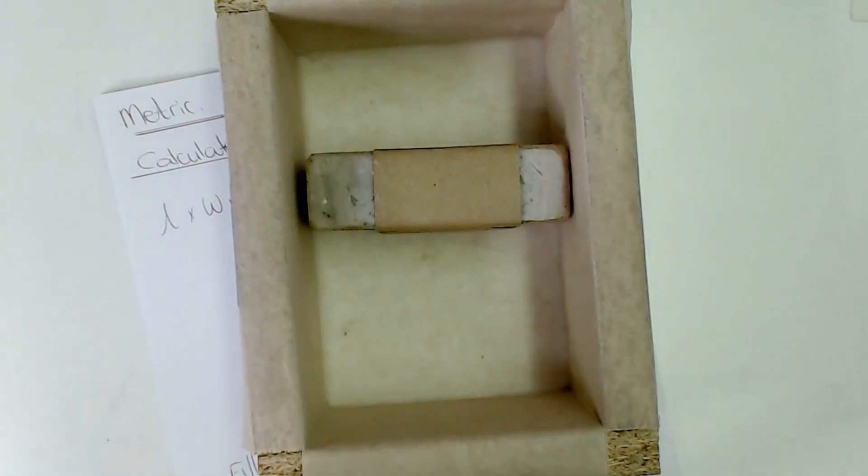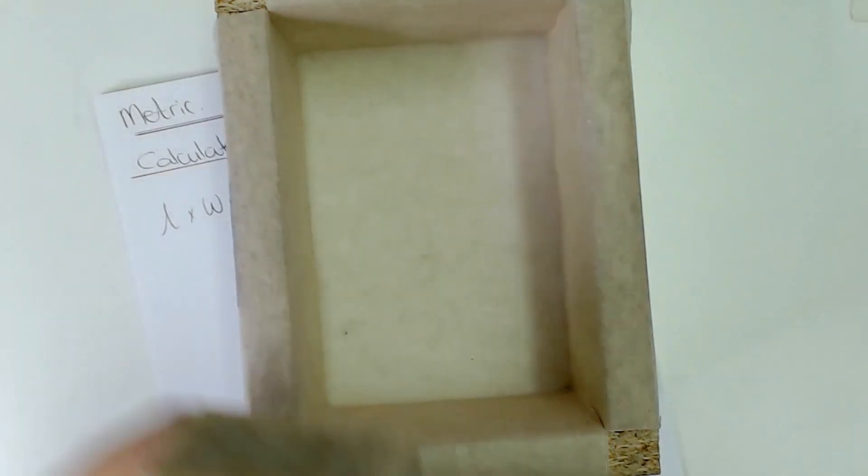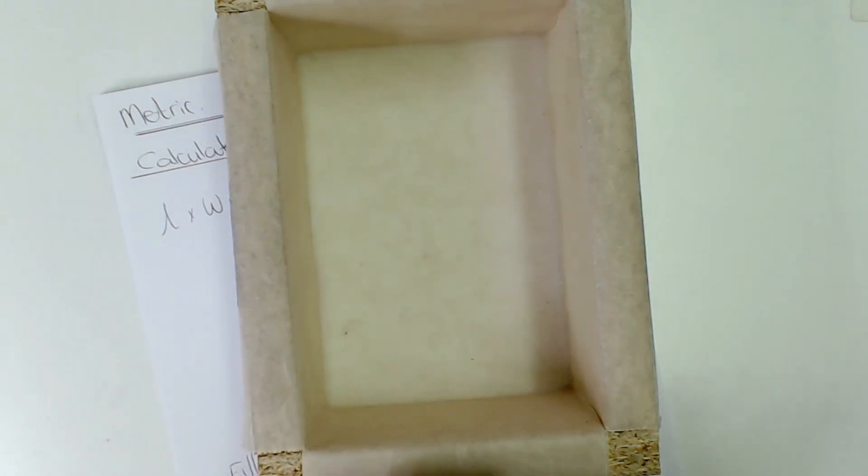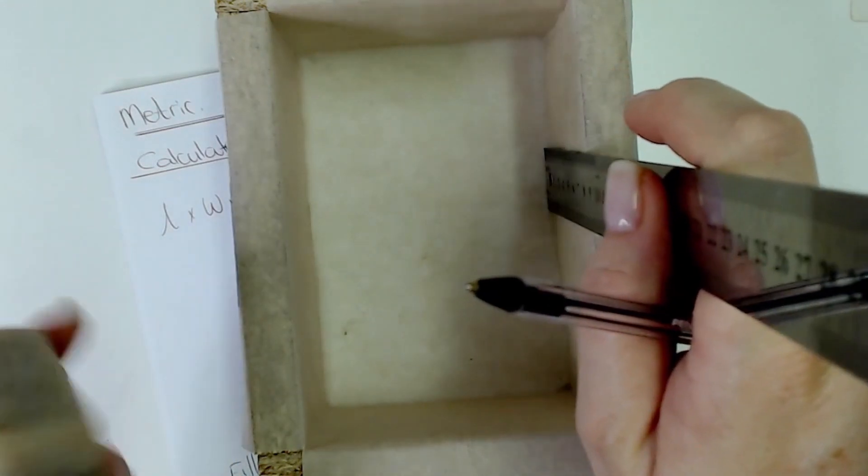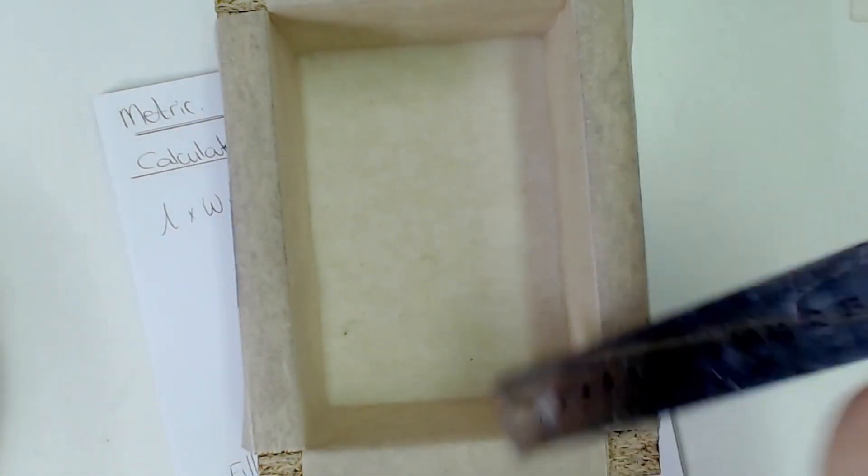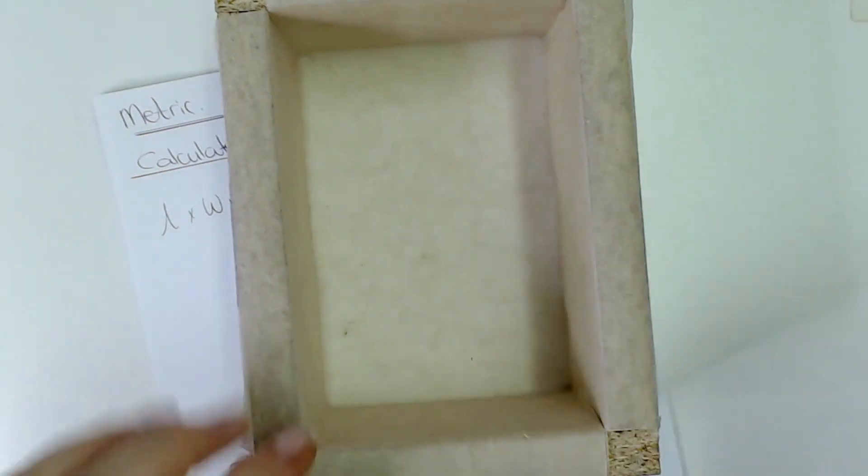Now this soap is already cured so it shrunk a little bit. It's a little bit less than six centimeters but I'm going to work on six centimeters because I know after four weeks it's going to be about this size. So the height is going to be for me six centimeters here.